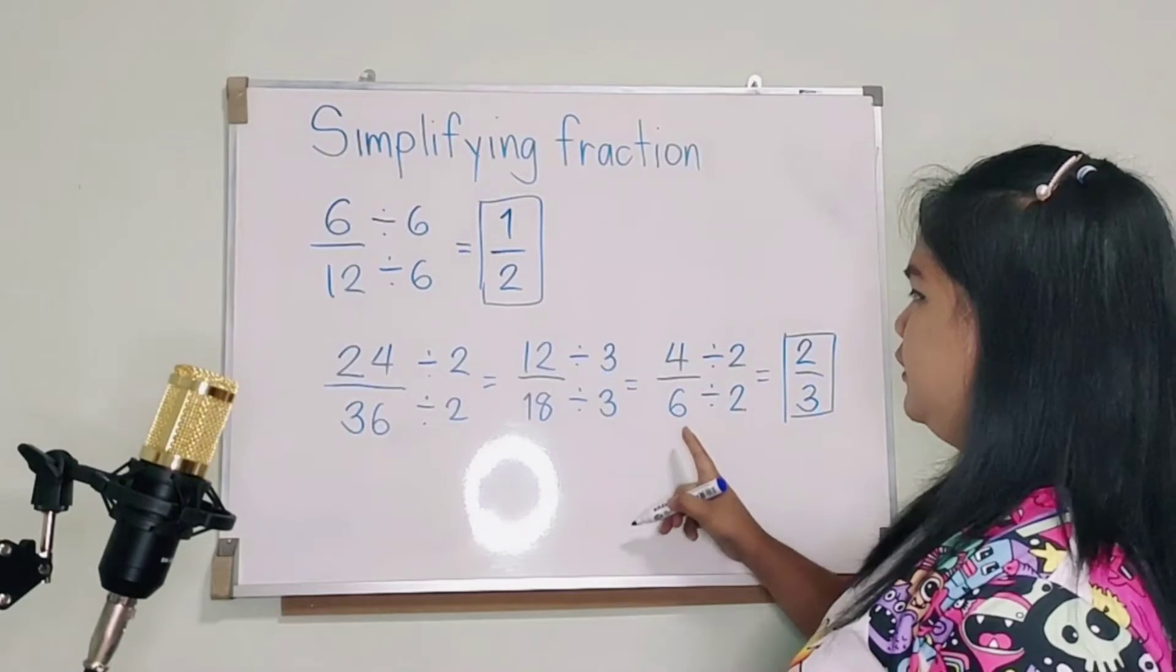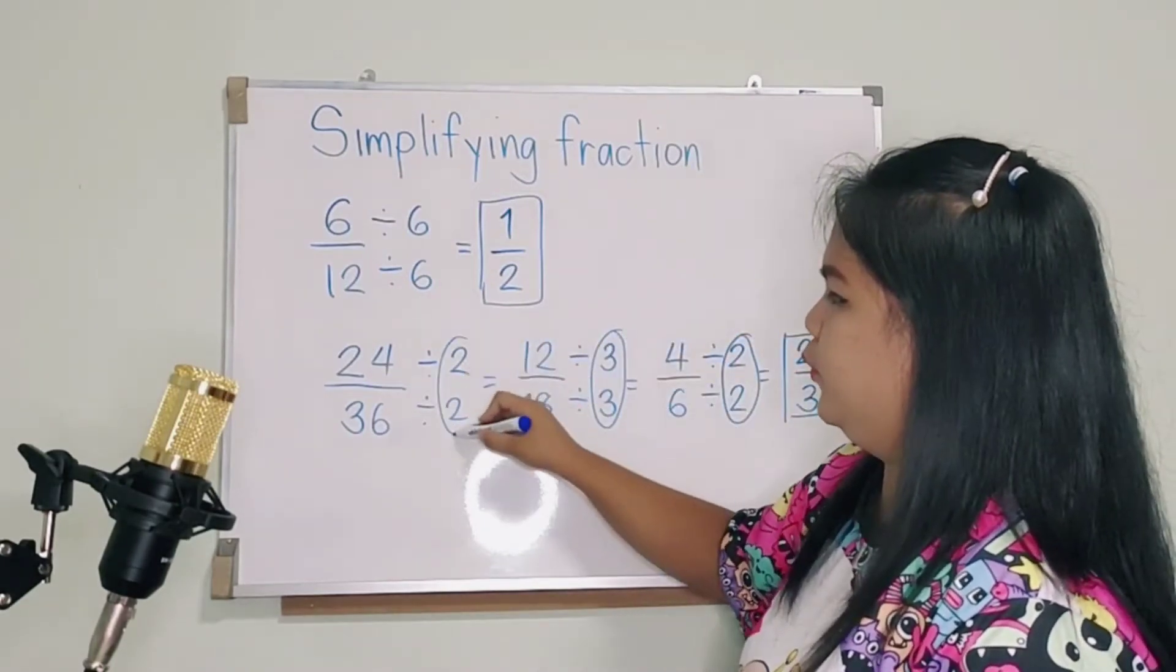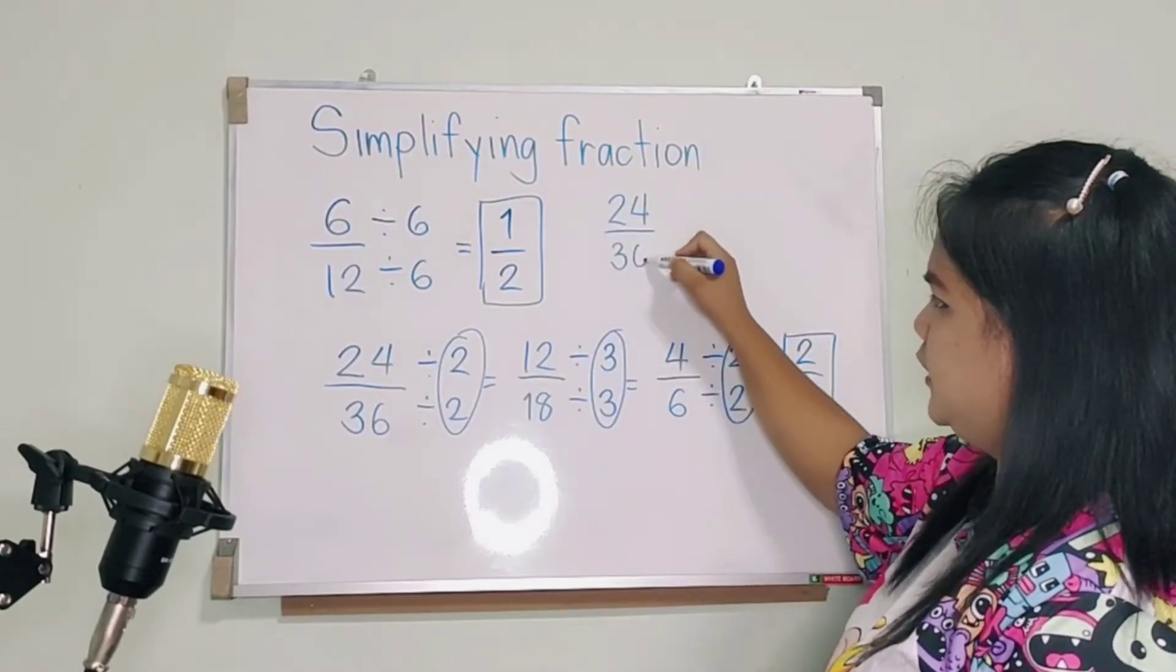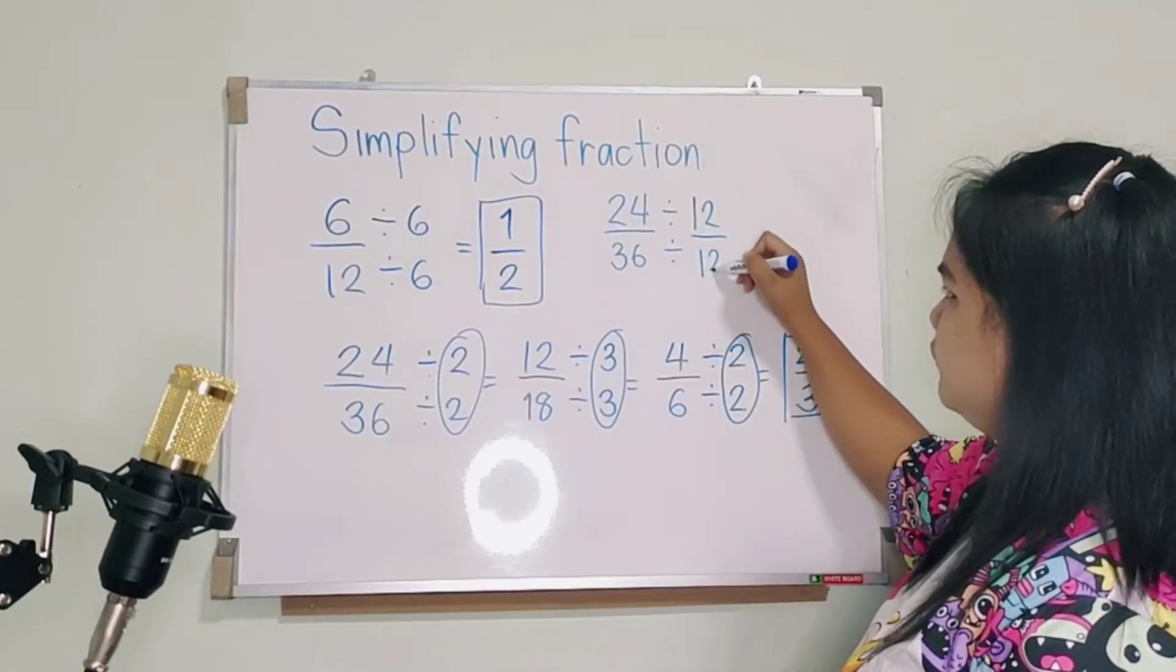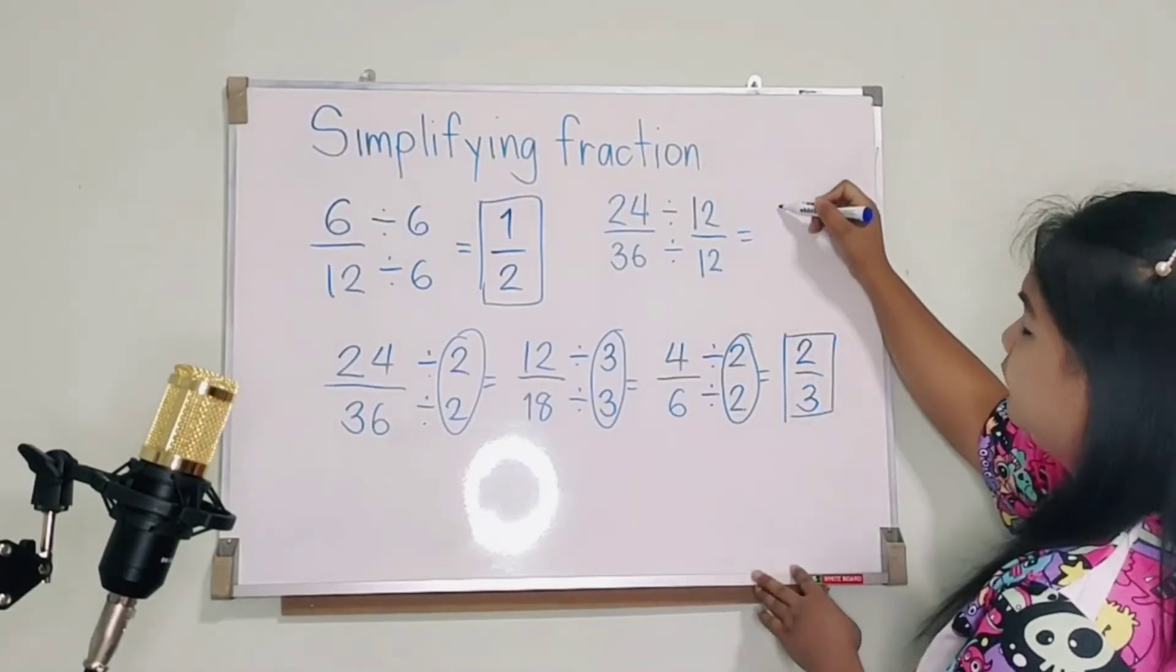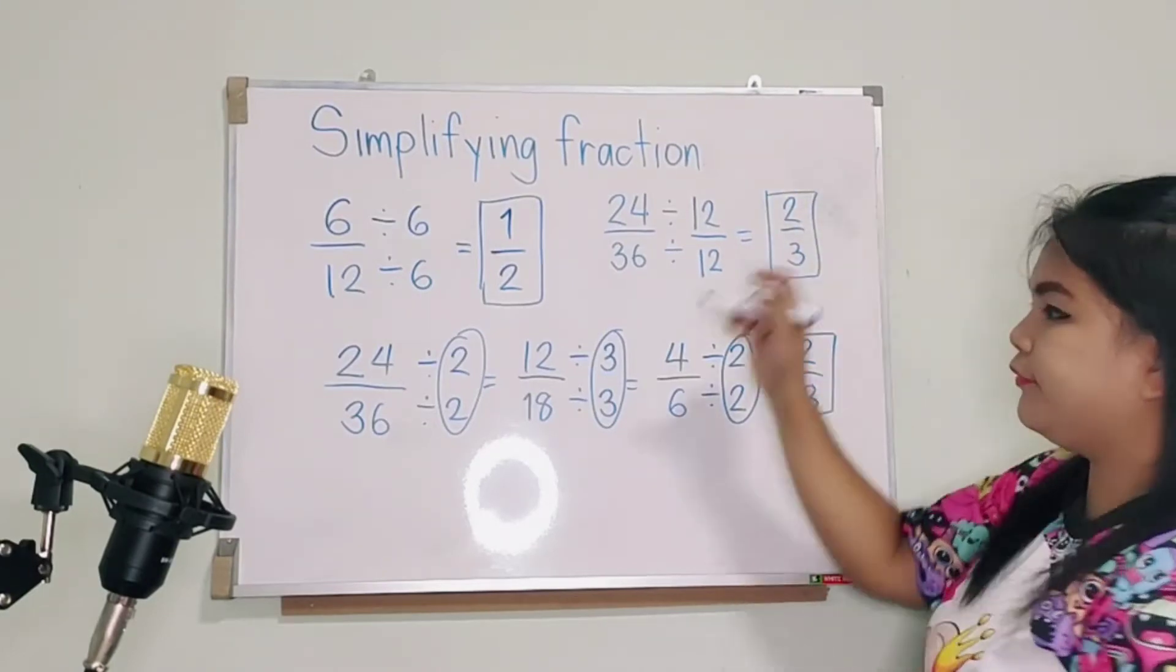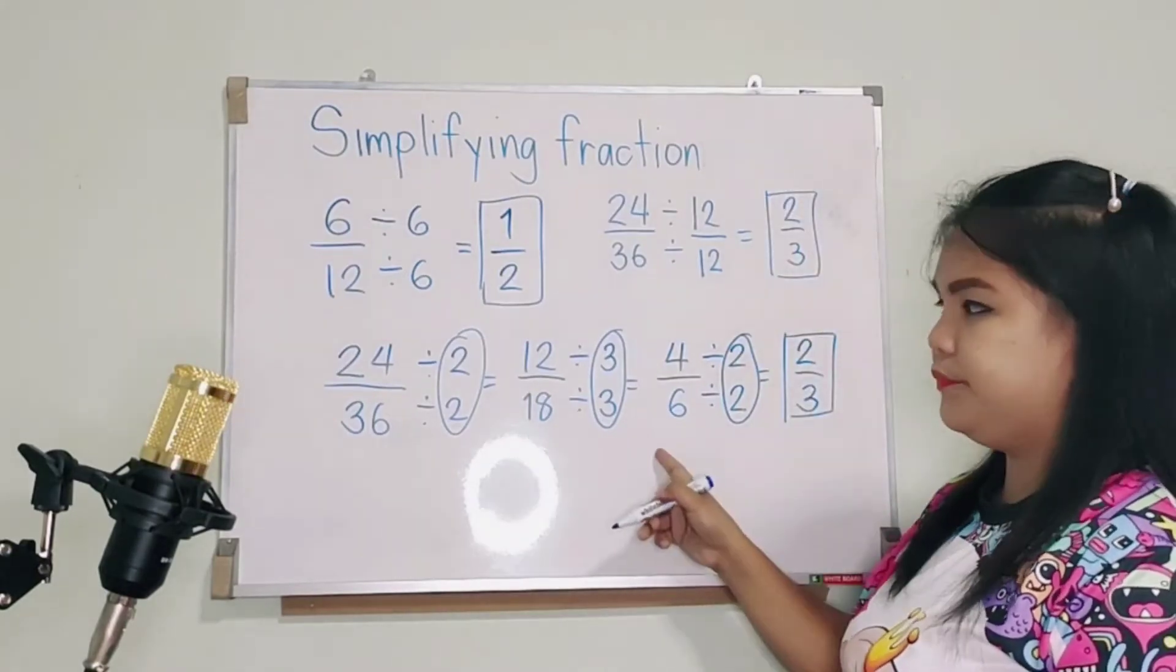We have the simplest way. You can combine this number in 1. So you will get what? 24 over 36 divided by both sides by 12. And I will get what? 2 thirds. Okay? But if you don't know the numbers yet, you can use this way.